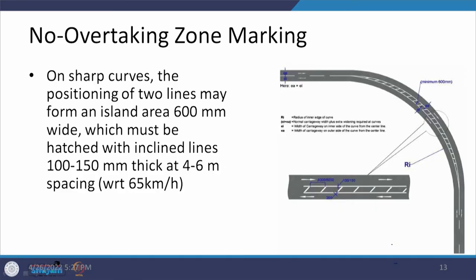The center line on a horizontal curve is somewhat eccentric due to curve elements, and there can be a gap between the two lines. This gap can create an island of 600 mm which should be hatched. When this 600 mm island is hatched, it indicates that vehicles are not allowed to enter that area — they should keep clear of it on either the inner or outer side, except in an emergency.